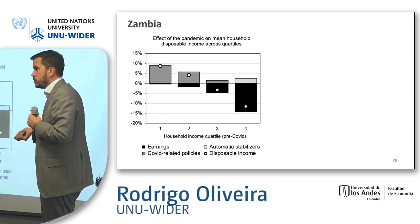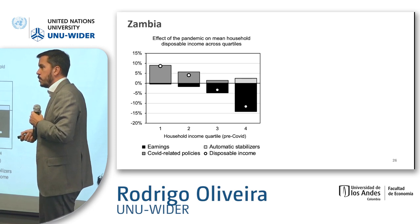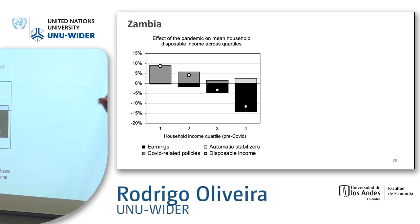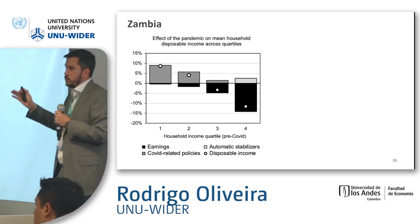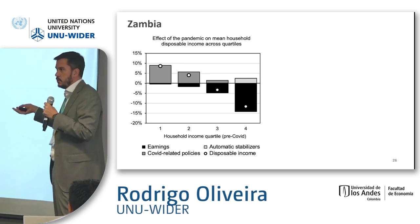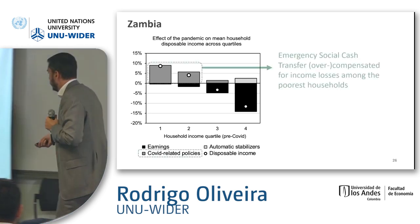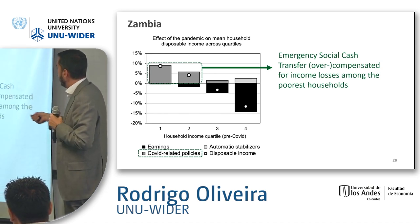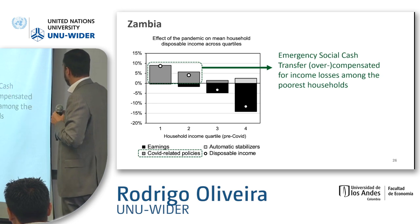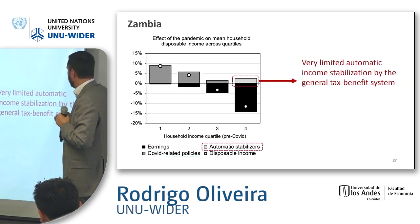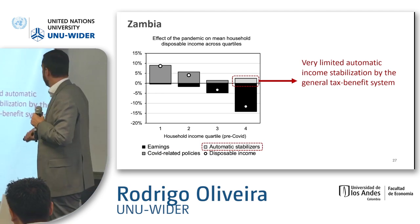To clarify — automatic stabilizers here refer to existing tax and benefit policy, which can include fiscal policy or unemployment benefits. For Zambia specifically, this shows the effect of the emergency social cash transfer, and as mentioned, the automatic stabilizer effects are very limited.